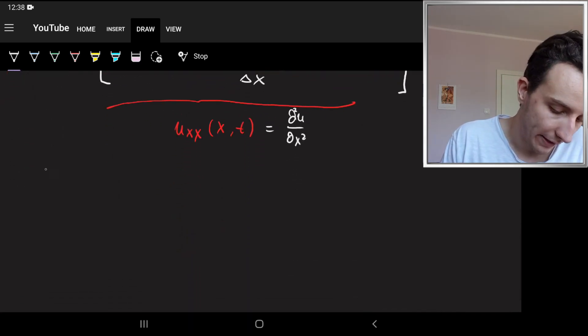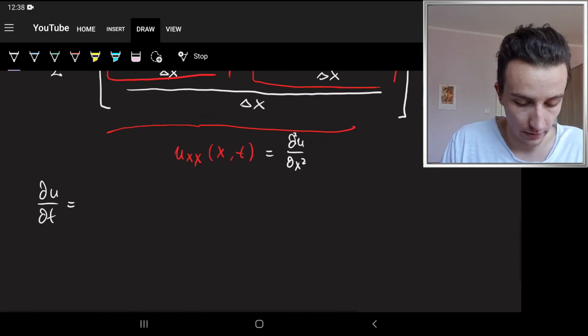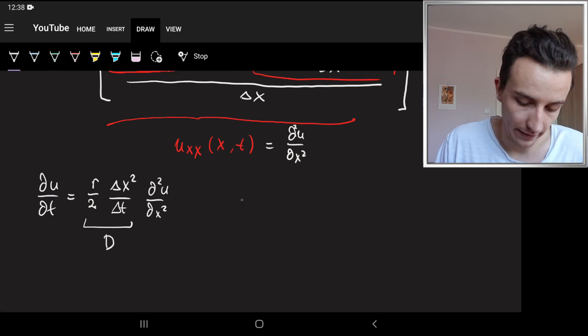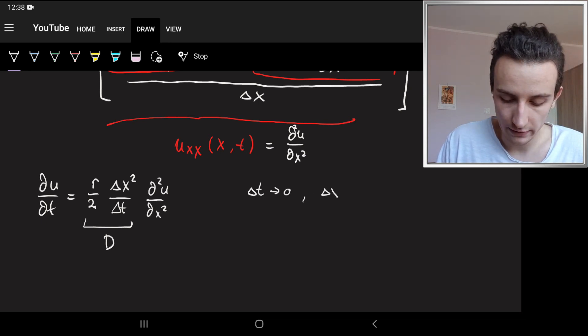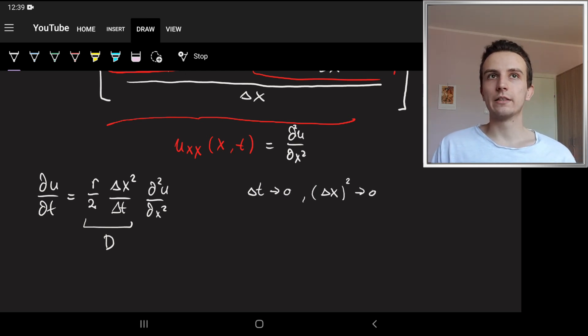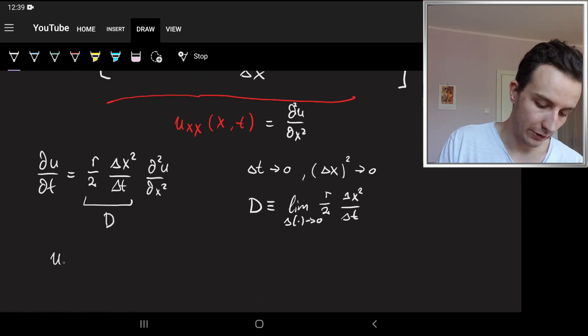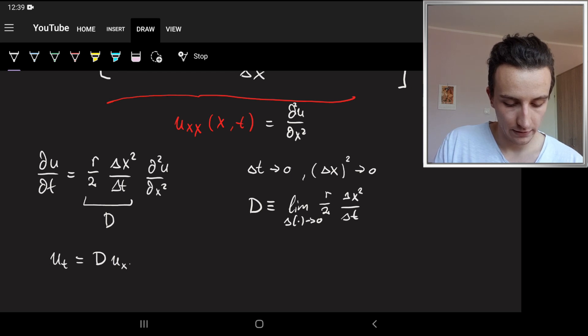Okay, and we can write it like that. So what we get is del u by del t equals r half delta x squared over delta t times del squared u by del x squared. And then we just call this d. We kind of say that as delta t tends to zero, we want delta x squared to tend to zero. So, you know, as we lower the time step, we quadratically lower the space step. That's kind of what it means, but you don't need to trouble yourself with it. So we define d as this limit. We could say delta operates to zero of r half delta x squared over delta t. Okay, and so we get that u_t is d u_xx. And that's the diffusion equation.